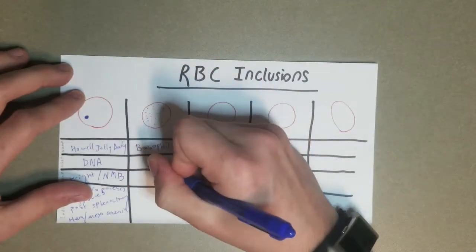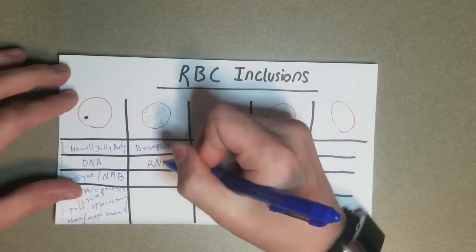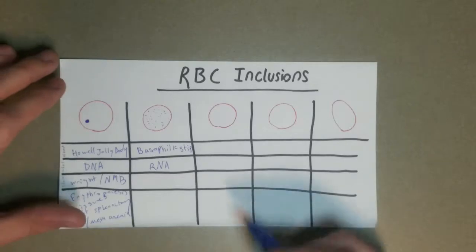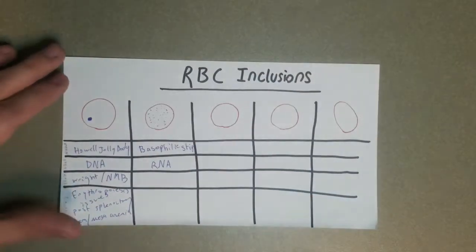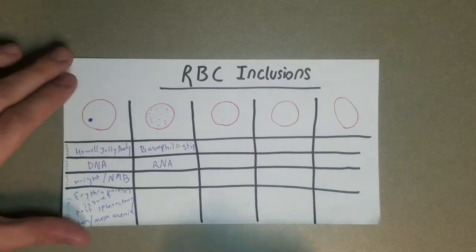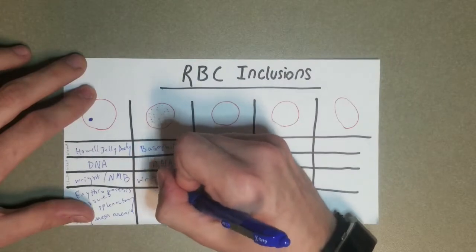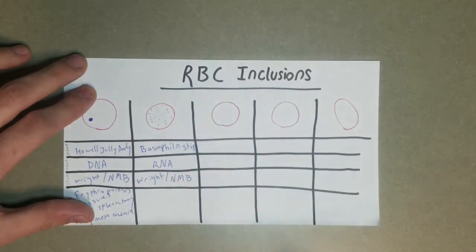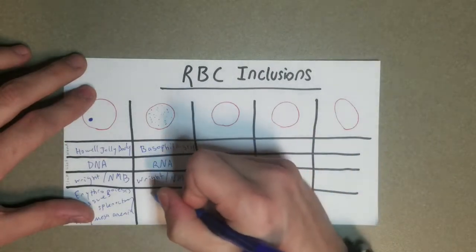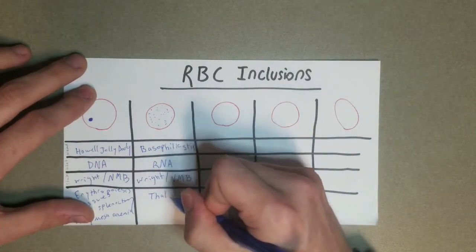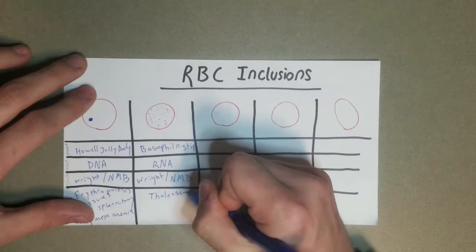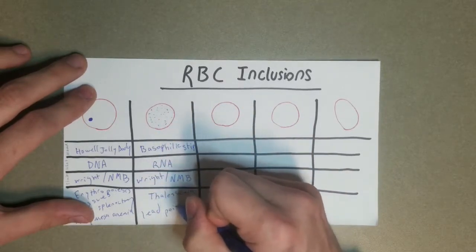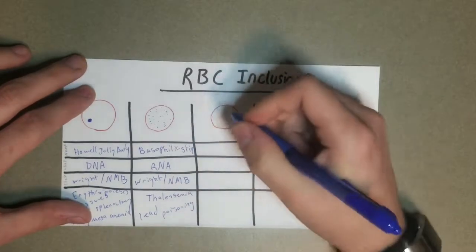This is formed of RNA, like little bits of RNA scattered throughout. And obviously, probably the most easy way to remember it would be that it looks kind of basophilic because basophils have all those tiny dots. You're going to see this on the Wright or a new methylene blue, just like the Howell Jolly Body. Now there's not really that many reasons for this. You're going to see it in thalassemia and also lead poisoning.